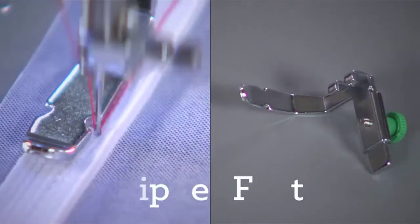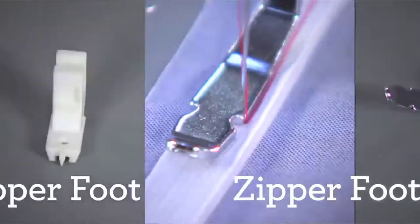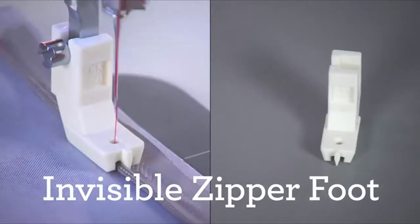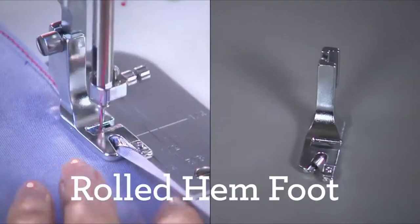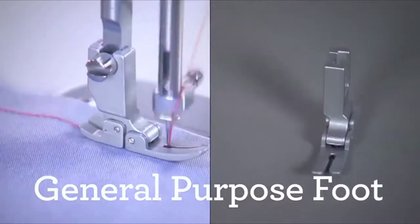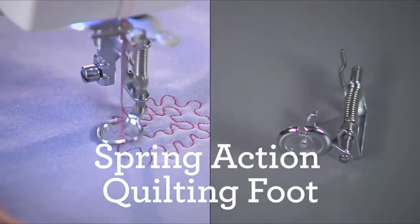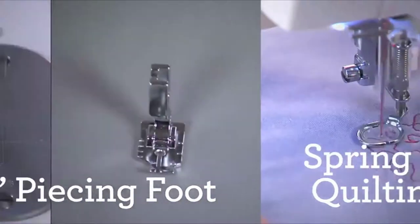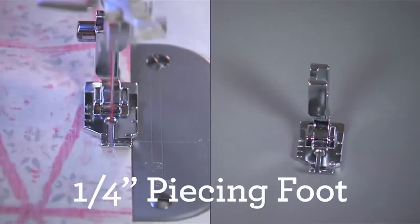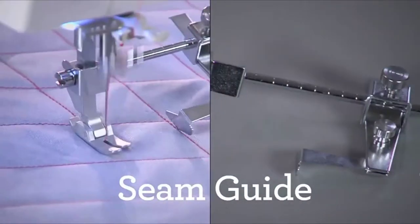You get seven presser feet with this machine. Included are the zipper foot and invisible zipper foot for zipper insertions, rolled hem foot for rolled hems, general-purpose foot for basic straight stitching, and for quilting, the spring-action quilting foot, quarter-inch piecing foot, walking foot, and a seam guide.